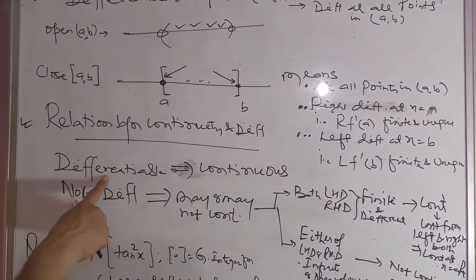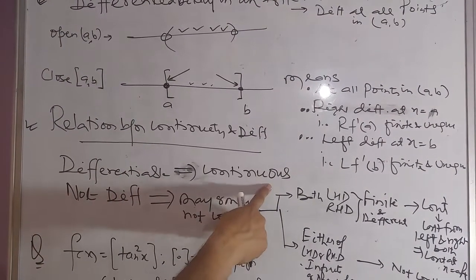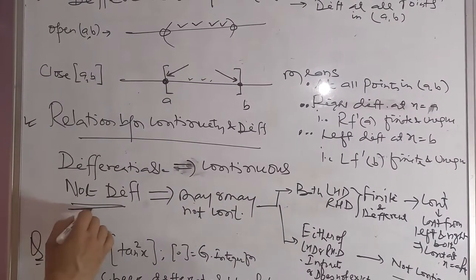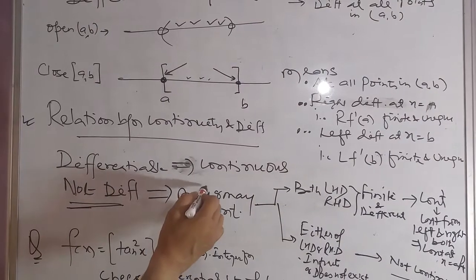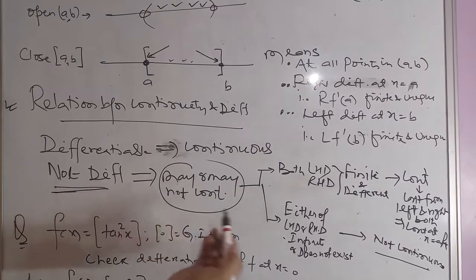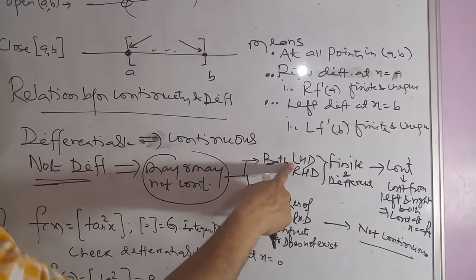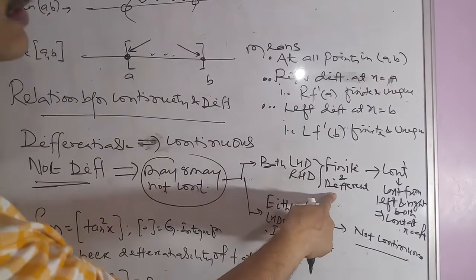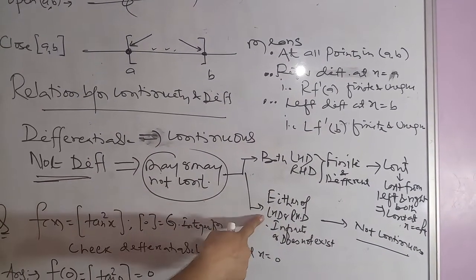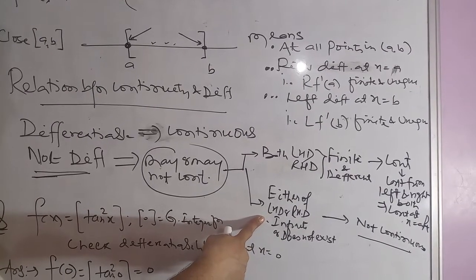A function differentiable at a point must be continuous at that point. But if a function is not differentiable, it may or may not be continuous. There are two possibilities: either both the left-hand and right-hand derivatives are finite but different, or either of the two is undefined or does not exist.